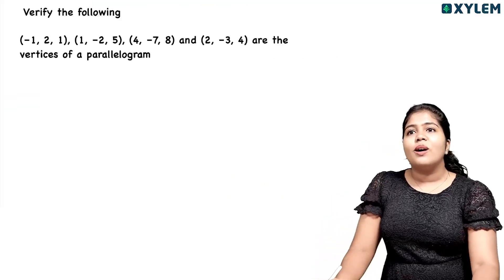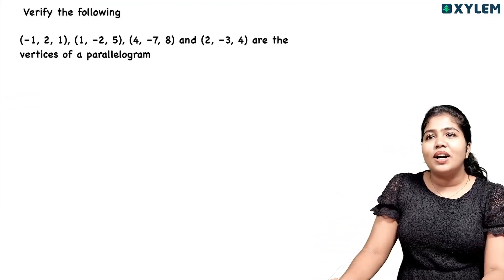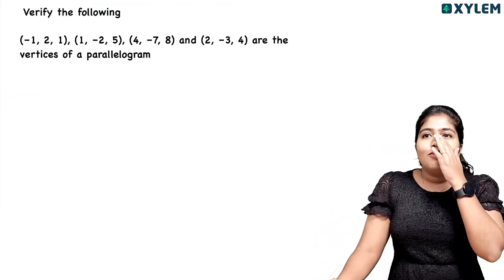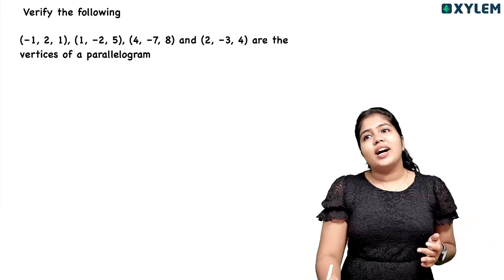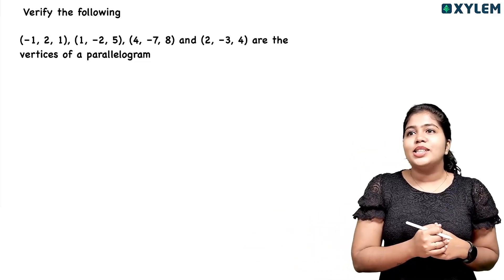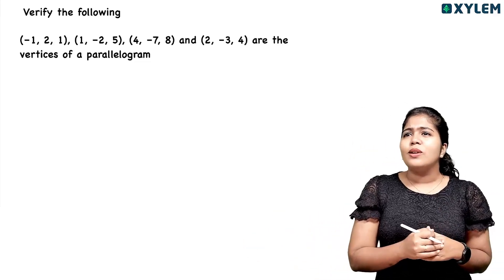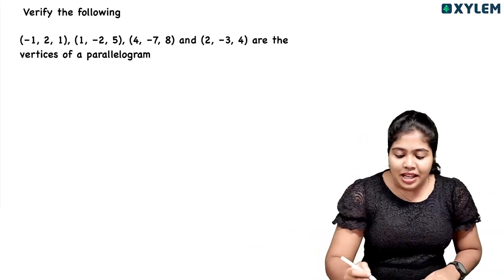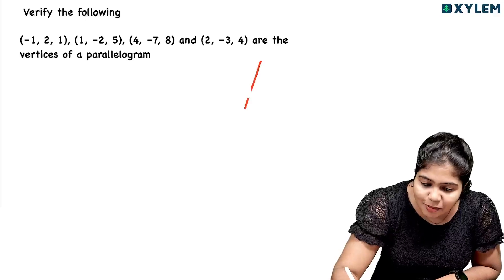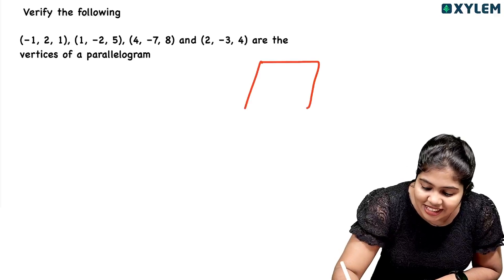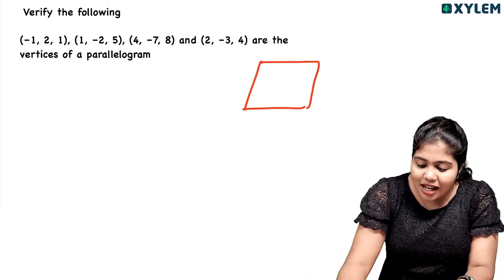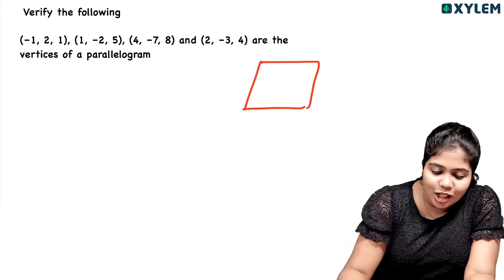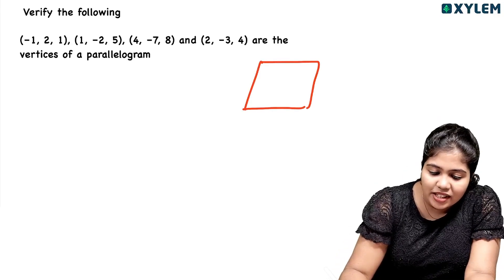Let's see the next question: verify the following — (1, −2, 5), (4, −7, −8), and (2, −3, 4) are the vertices of a parallelogram. If you look at a parallelogram, you have 4 vertices.